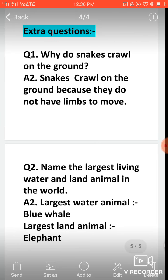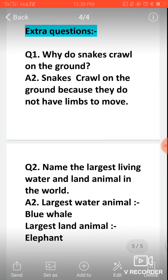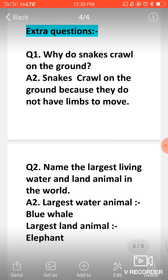Now question two, name the largest living water and land animal in the world. Largest water animal is blue whale. Everybody knows that. If I ask you which is the largest water animal, you will say blue whale. And largest land animal is elephant.